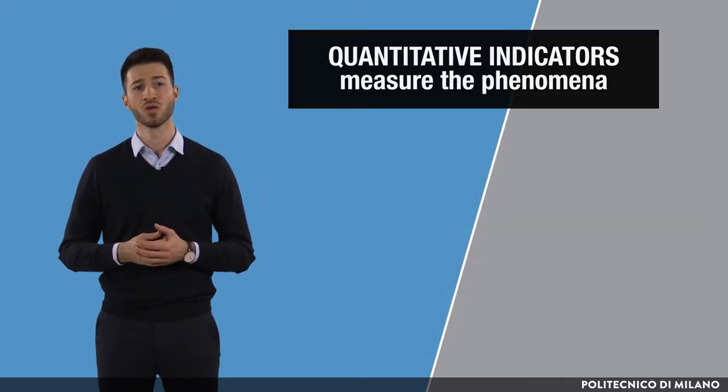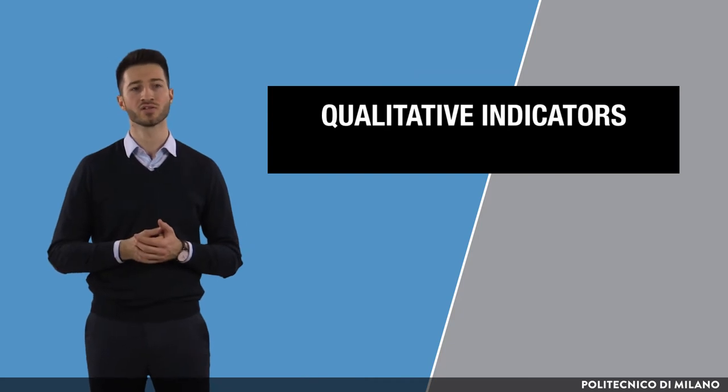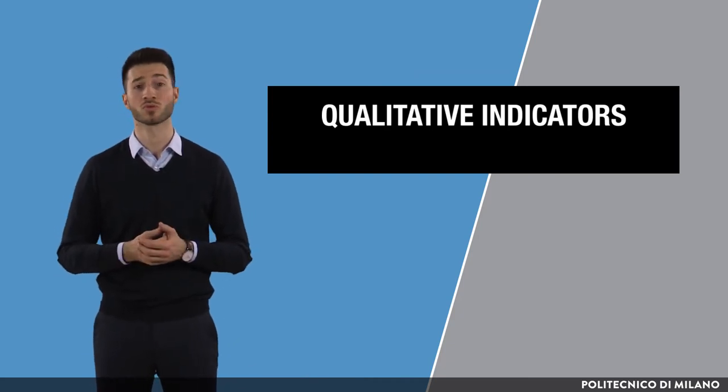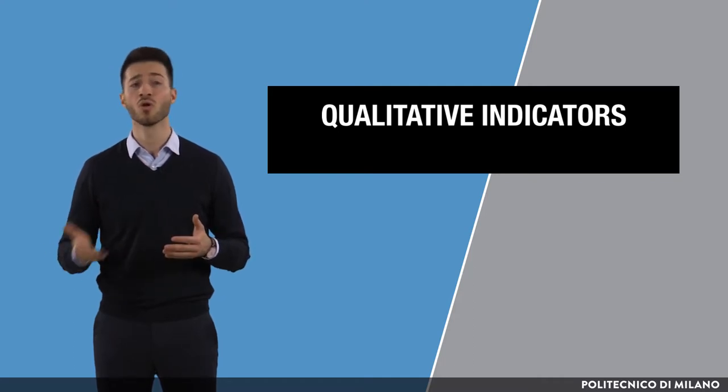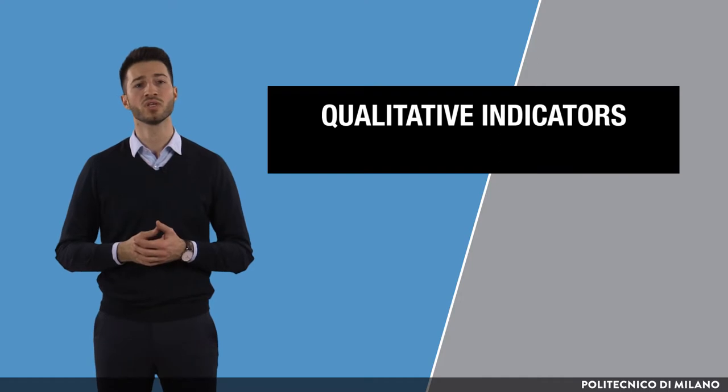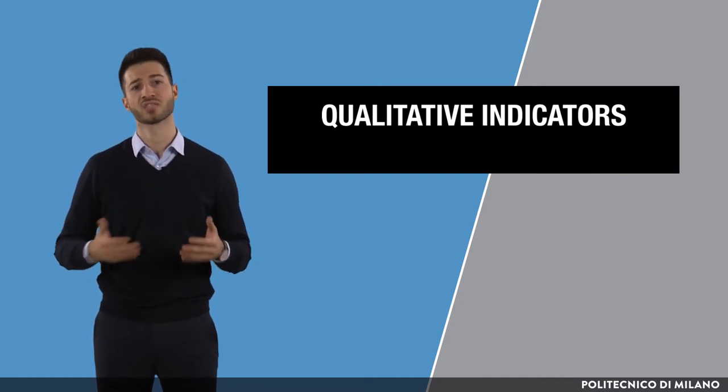On the other hand, qualitative indicators are used when it is not possible to clearly and uniquely quantify a change in a phenomenon, and they convey information in textual or descriptive form, including both statements of facts as well as opinion.